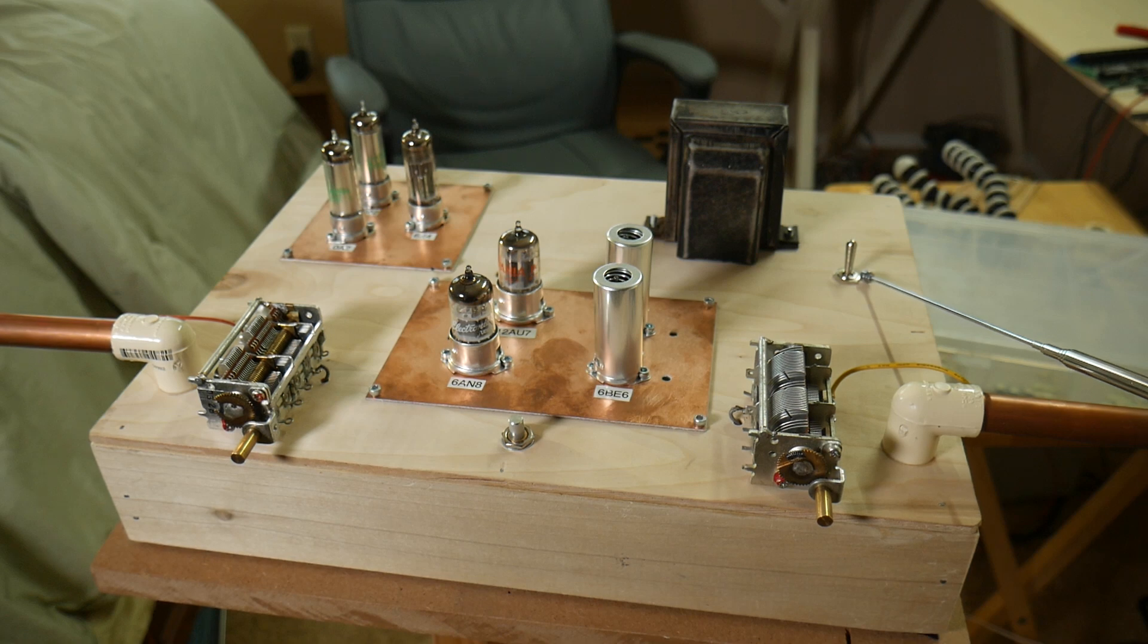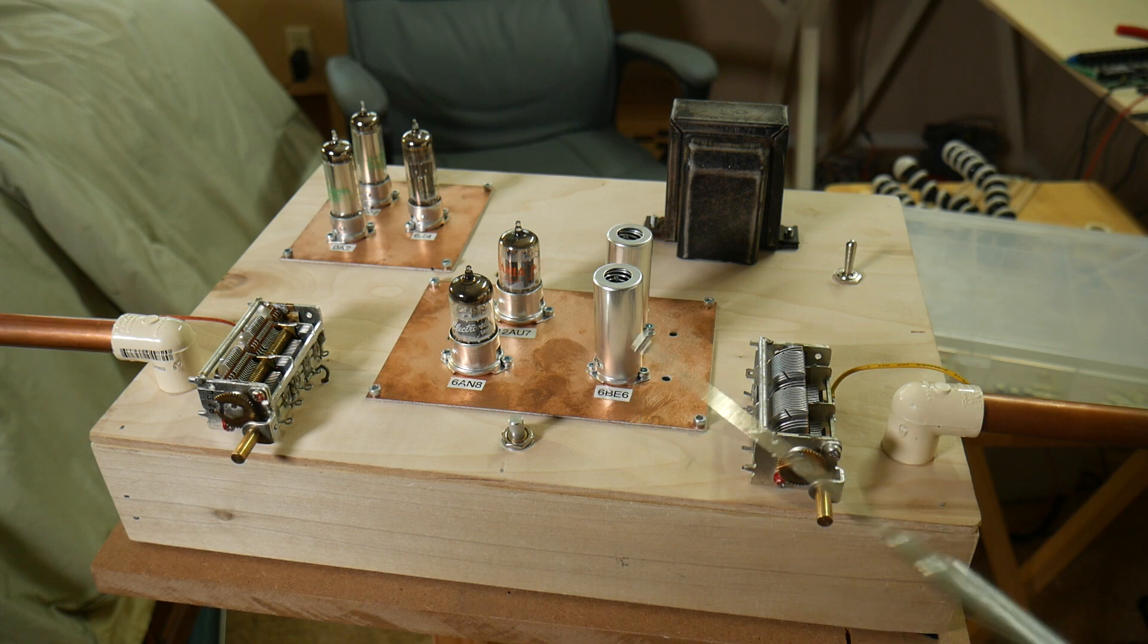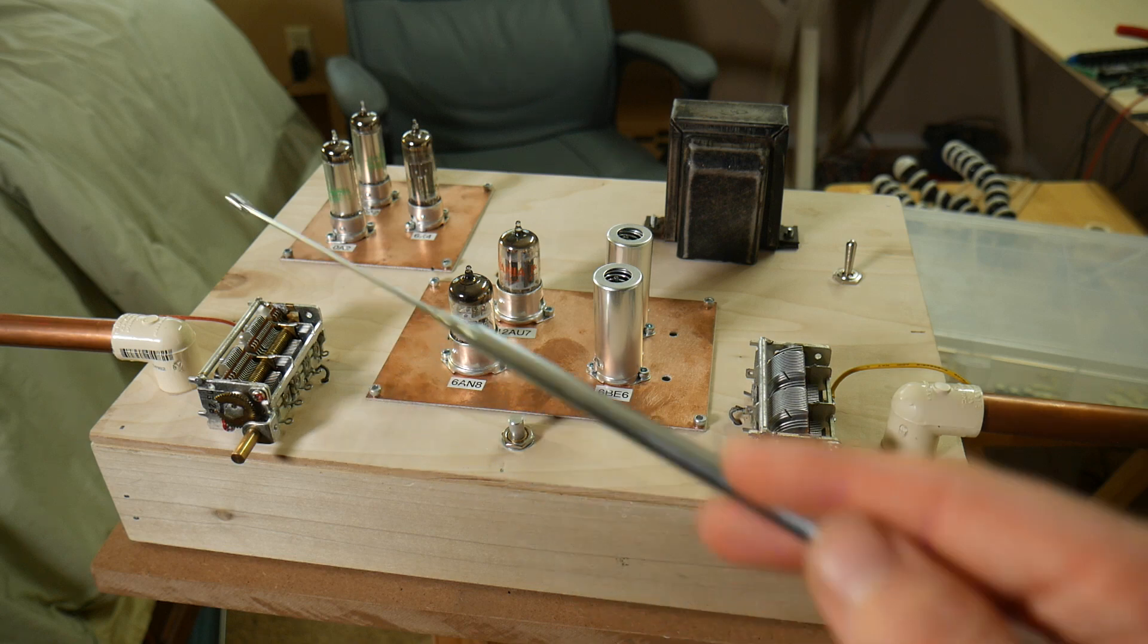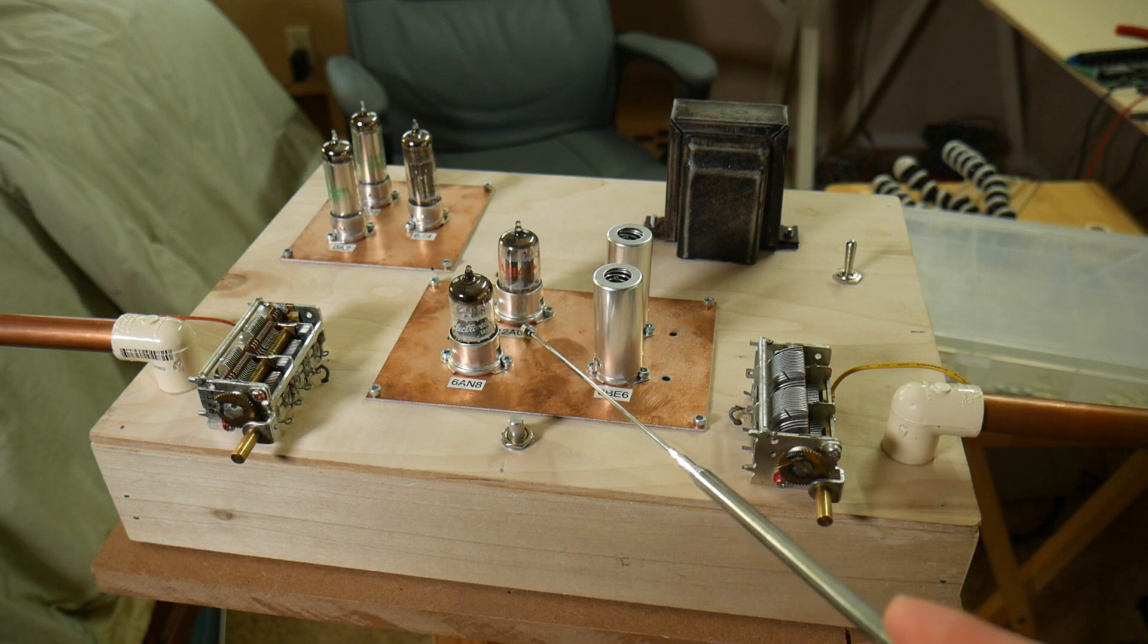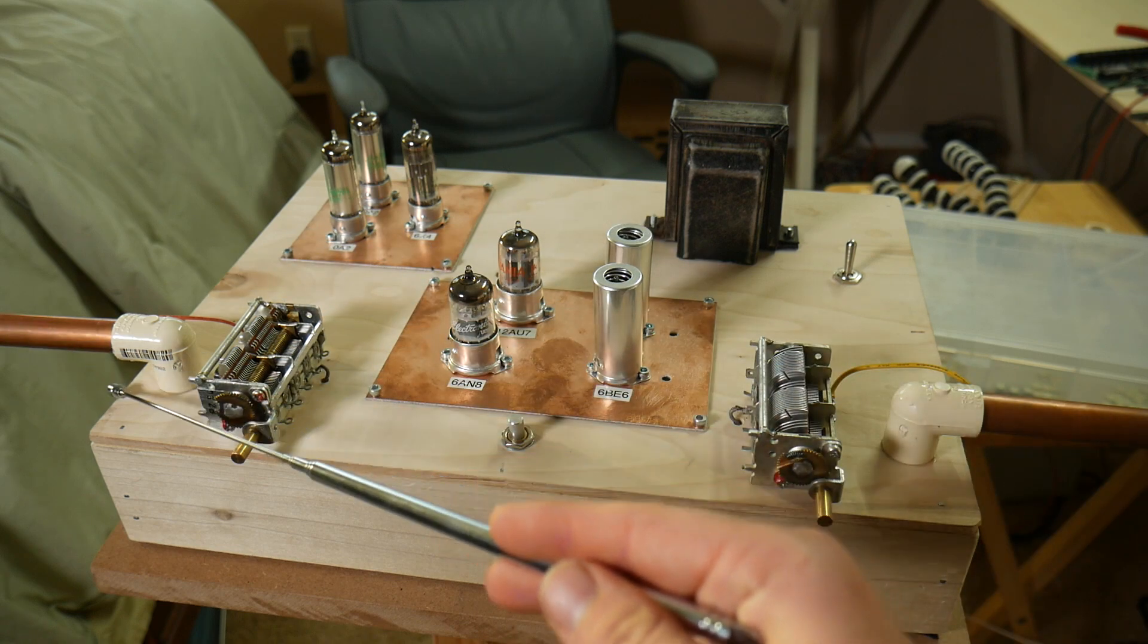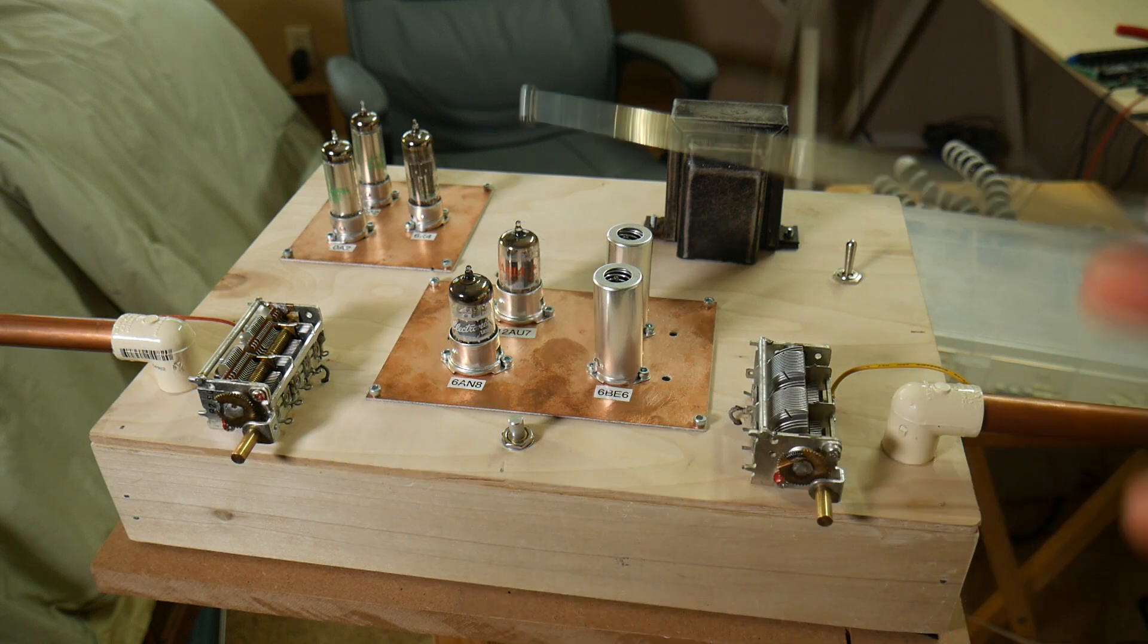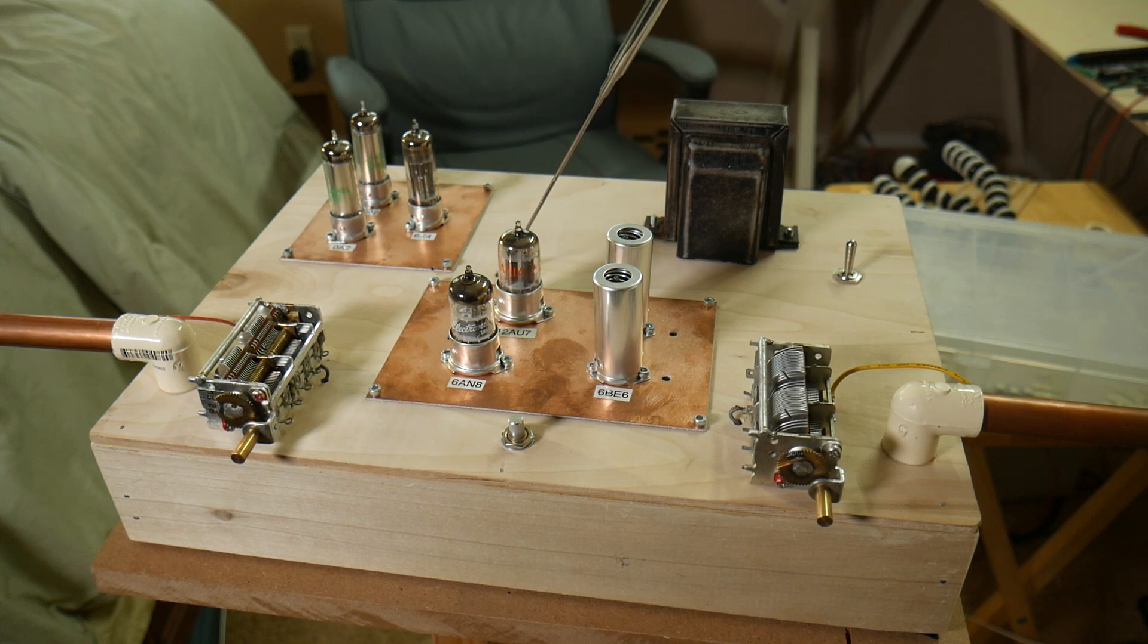This is the power switch. Then, here is the heart of the theremin. We have two 6BE6 tubes that consist of the pitch oscillator. Then, we have the 6AN8 tube, which is the volume oscillator, which puts out a voltage based off how close your hand is to this antenna. Then, we have the 12AU7 in the back. It's the mixer tube, which mixes the incoming signals from both of these antennas into the final output audio signal that comes out of this 3.5mm headphone jack behind here.